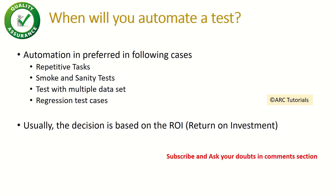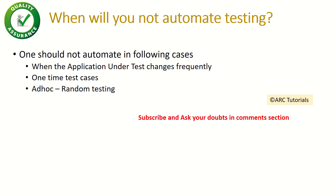Investors would also want to know there is a good return on investment — that you write automation once and can reuse it. The next question is: when should you NOT automate? When your application is undergoing frequent changes, it's not a good idea to automate because you'll have to keep updating your scripts. You need some stability in your application. Also, for one-time test cases or ad hoc and random testing, manual testing is preferred over automation.